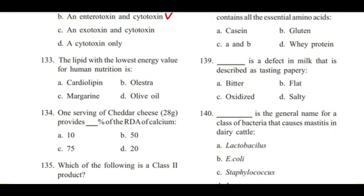Question 133: The lipid with the lowest energy value for human nutrition is — Cardiolipin, Olestra, Margarine, or Olive oil? Answer is B, Olestra. Olestra is a polyester derived from sucrose; it is a calorie-free substitute for fat.